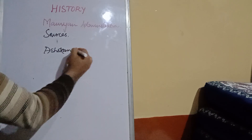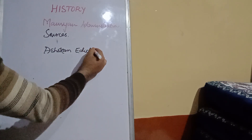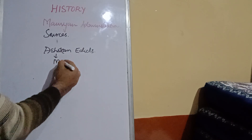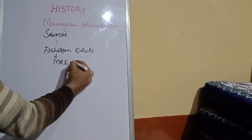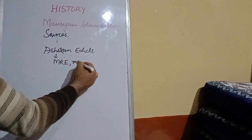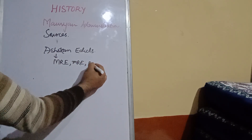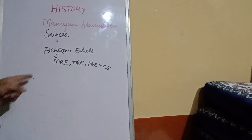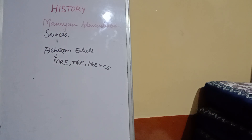Number three was the Ashokan Edicts. The Ashokan Edicts, as we know, were of four types, which I have already discussed in previous videos: number one, major rock edicts; minor rock edicts; pillar edicts; and cave edicts. All these edicts give us information about Mauryan administration, principles, religion, Buddhism, and Ashoka's reign period.